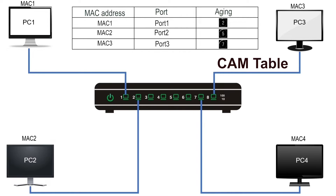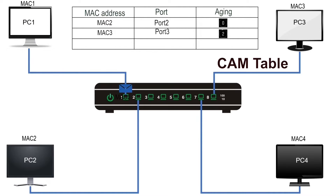Once the CAM table is full, the switch has no place to store new addresses. Aging resolves this by automatically removing old entries. It keeps the MAC addresses of only those devices that are constantly sending frames. If a device is not sending frames and its timer expires, the switch removes that device's MAC address from the CAM table. Only devices that are constantly sending frames remain in the CAM table.